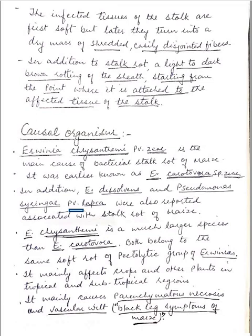It mainly affects crops and other plants in tropical and sub-tropical regions. It mainly causes parenchymatous necrosis and vascular wilt. These bacteria also cause the black leg symptoms of maize.